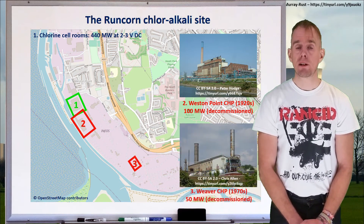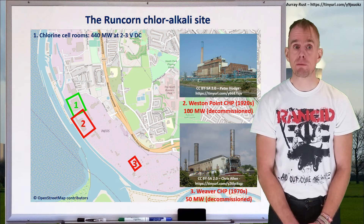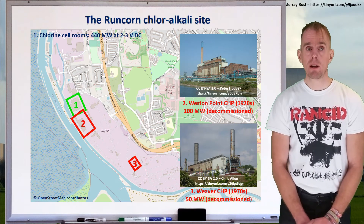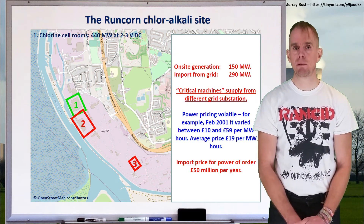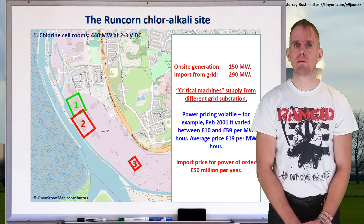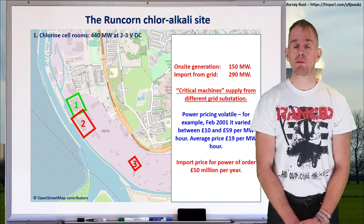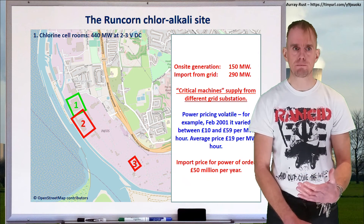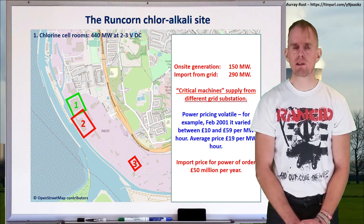In the 1970s, another combined heat and power plant was built on site — the Weaver CHP — supplying 50 megawatts of electrical power and steam. So onsite generation up until the early 1990s was about 150 megawatts electrical, meaning 290 megawatts had to be imported from the grid. It should be noted that the supply to critical machines — such as chlorine scrubbers — was sourced from a different part of the grid, so that if the main power supply failed, these critical pieces of equipment would still continue to work.